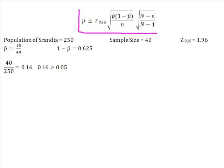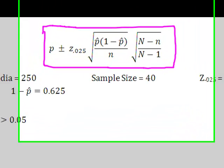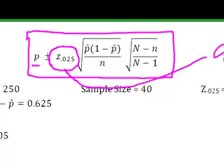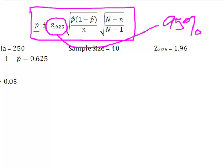I've got my big formula up here, which tells me that in order to calculate this confidence interval, I'm going to have to take P, plus or minus, and this Z.025 is simply that 95% confidence interval.